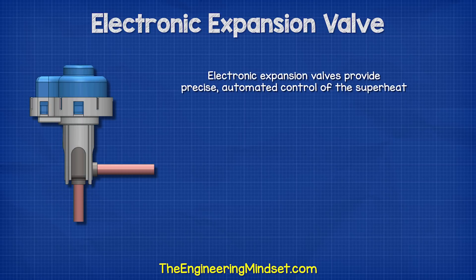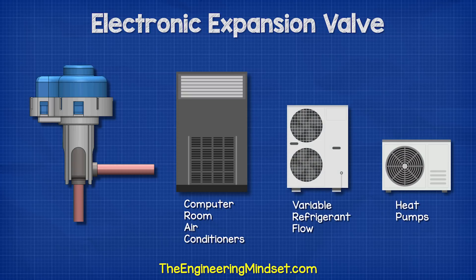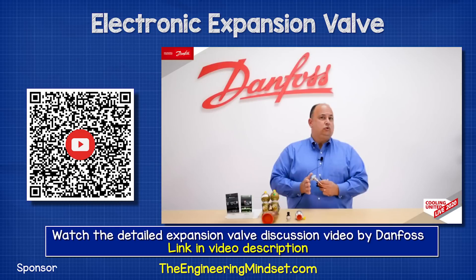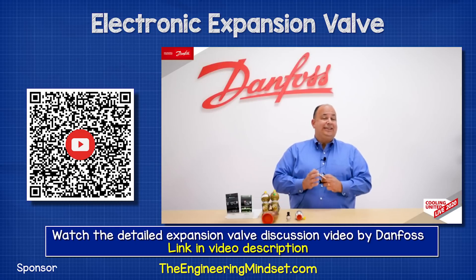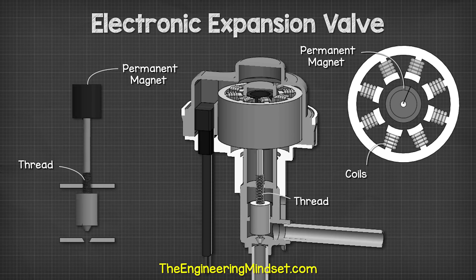So it can provide very precise automated control of the superheat. This particular valve has purposely been designed to be small, which makes it perfect for installations within CRAC units or computer room air conditioners, as well as heat pumps and variable refrigerant flow systems. Don't forget you can find out more by visiting the Danfoss video — the link is in the video description down below. That's it for this video, but to continue learning about HVAC and refrigeration engineering, click on one of the videos on screen now.